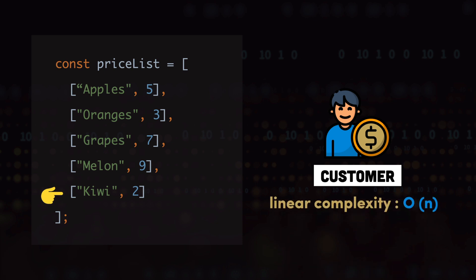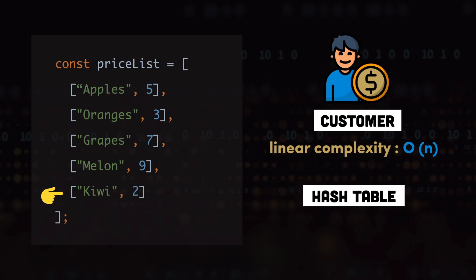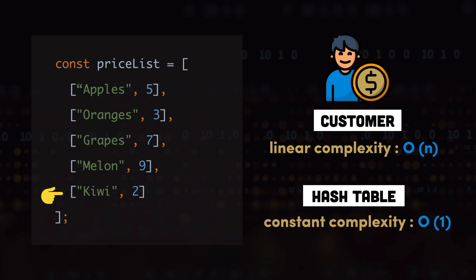For a simple dataset with only five different fruits in the shop, the array representation looks fine. But imagine if we start selling 1000 different items — in that case our search is going to get much and much slower and it is going to have an impact on the user experience. We can improve our price list by using the hash table data structure, where the algorithmic complexity for finding the price is always going to be constant. Which means that even if we start selling 1 million different items, it is still not going to impact the speed of search.